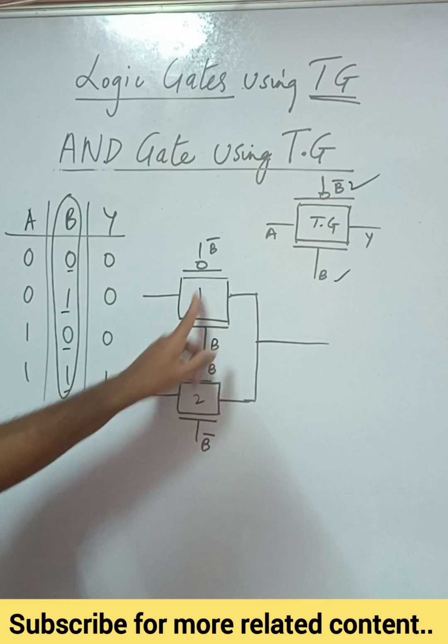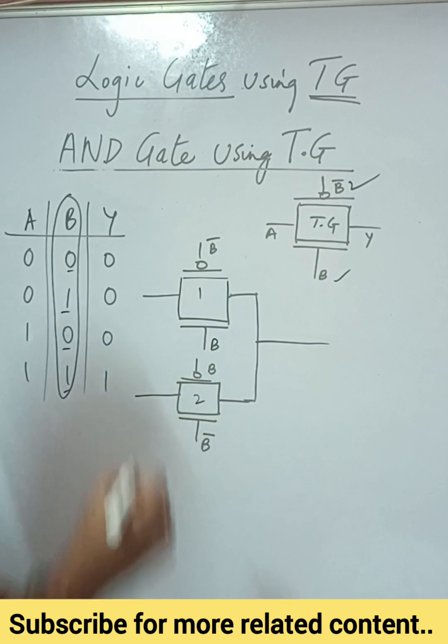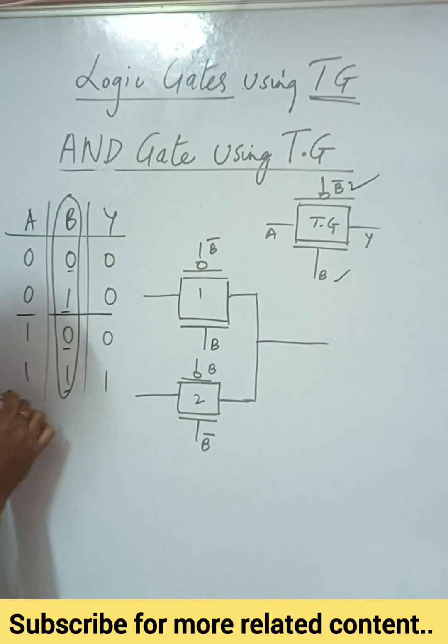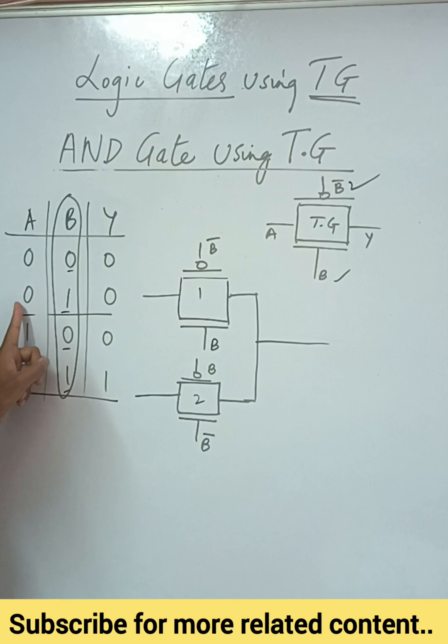Now when b is equal to one, this transmission gate will be on. So how many combinations are there when b is equal to one? One and two. Now what is the output? Input is zero, output is also zero. And when input is a, output is also a. That is zero zero, one one.